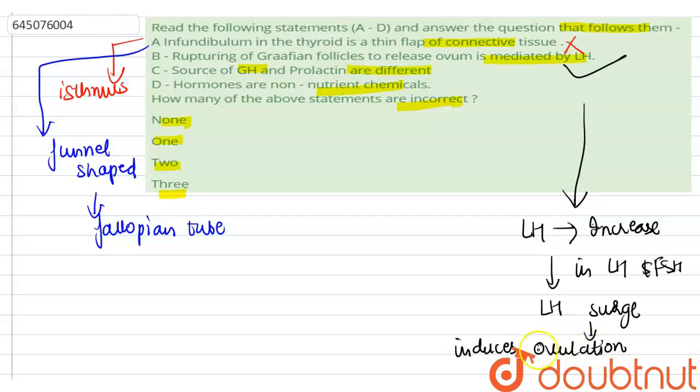ovulation, which is the release of a mature ovum, release of a mature ovum from the ovary, and it promotes the development of the corpus luteum, corpus luteum, which is formed by the rupture of Graafian follicle. So this statement is correct.